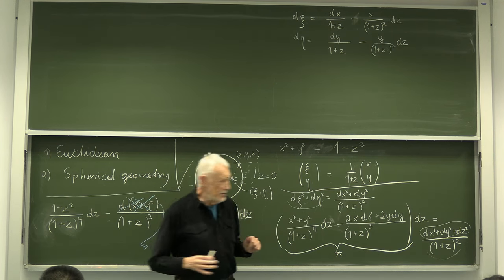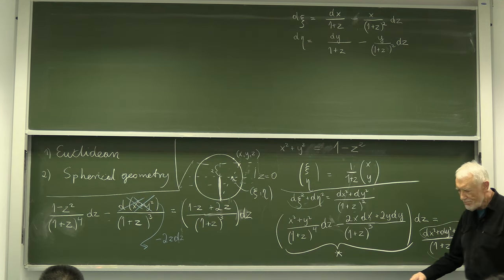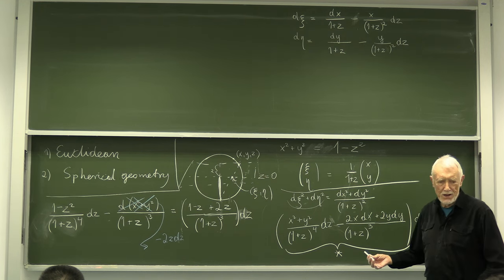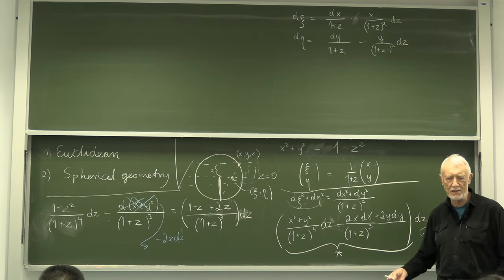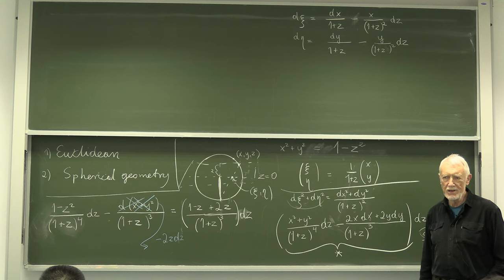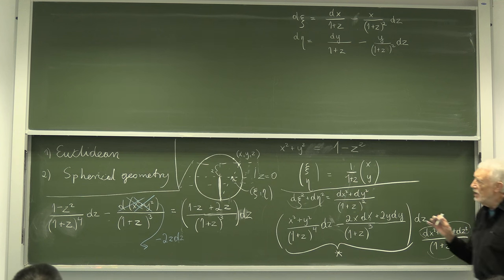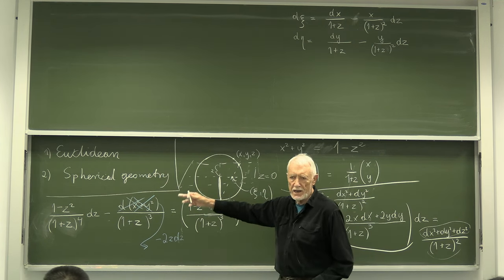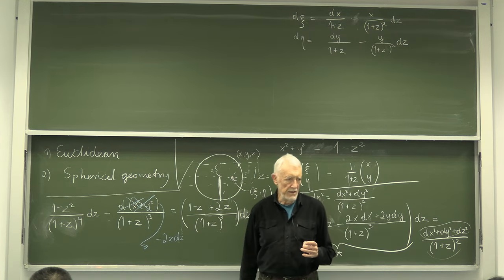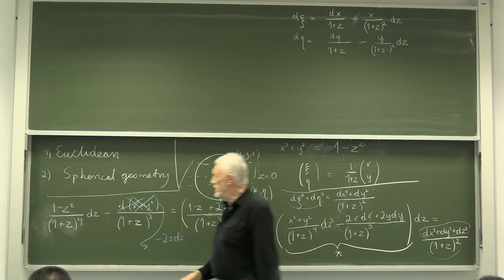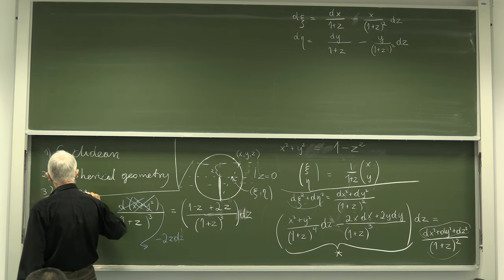These two metric structures — the spherical metric structure and the metric structure on the plane — are conformal because one is proportional to the other. This exercise is a little unfair within this lecture because I have not introduced the notion of a metric, but surely you know it a little bit. I only wanted to show that spherical geometry is in a sense conformal with flat Euclidean geometry.